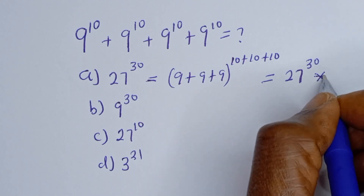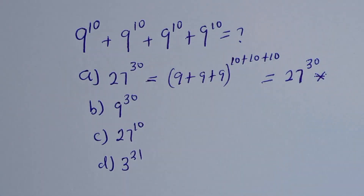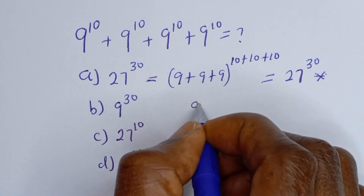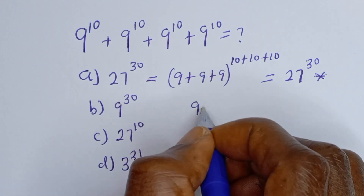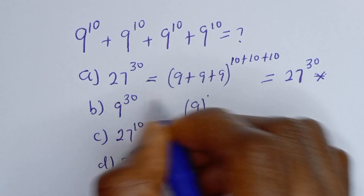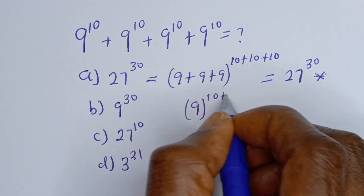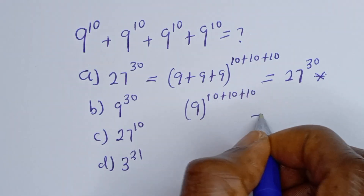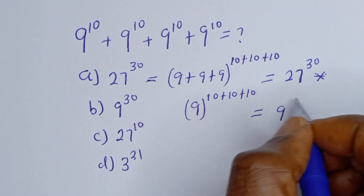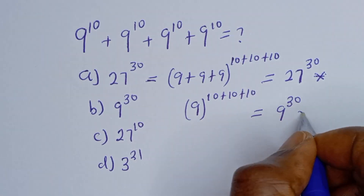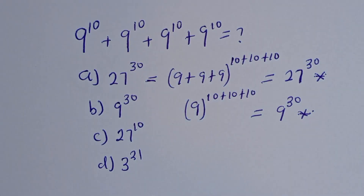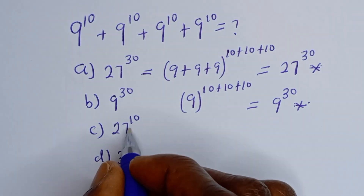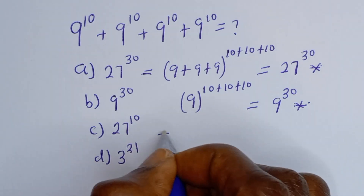This is not the answer — option A is wrong. Now let's look at option B: the base is 9 and the power is 10 plus 10 plus 10, which equals 9 to the power of 30. This is also wrong.